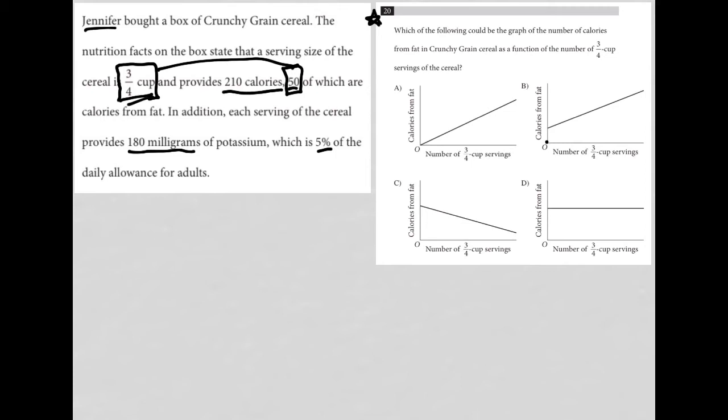Choice B is eliminated because at zero cups, we're at some unknown value. That tells me that choice C is also gone for the same reason, and choice D is also gone for the same reason, leaving only choice A as a viable answer.